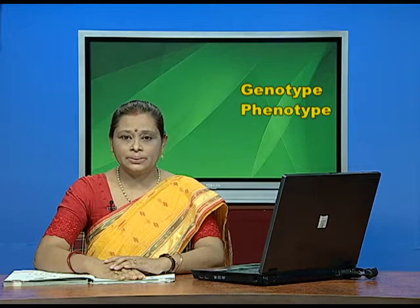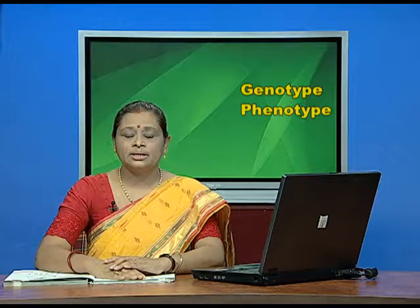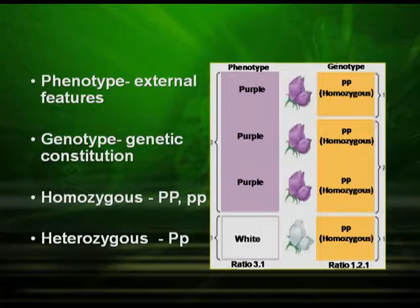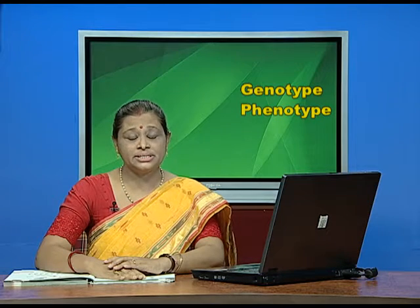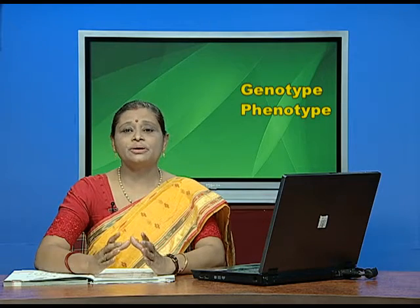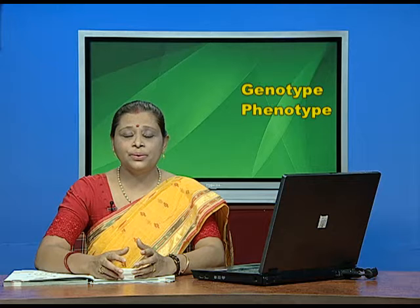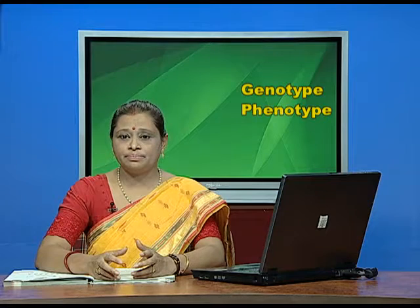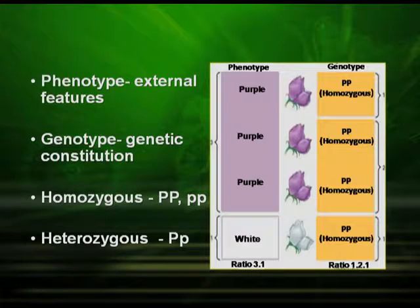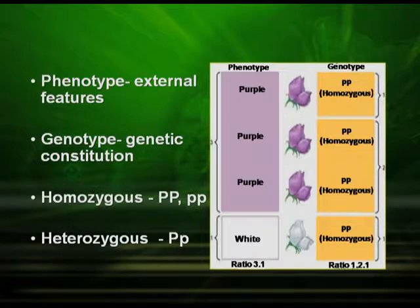You must have heard about genotype and phenotype. The phenotype is the external features of an organism — whether it is tall or dwarf — what you can see. The genotype is the genetic constitution of an organism. Genotype can be homozygous, meaning both alleles of a gene are of the same type — for example, PP or pp. In the heterozygous condition, the alleles are of two different types, denoted as Pp.